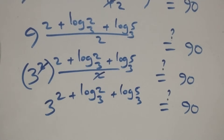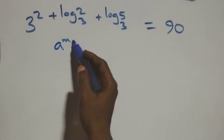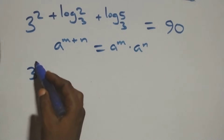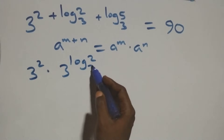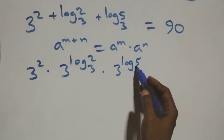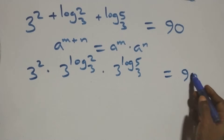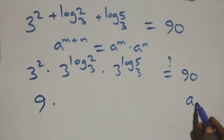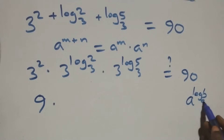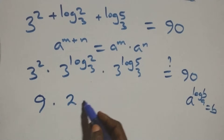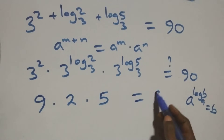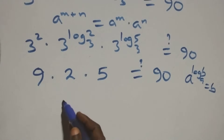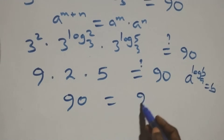Then also here, 9 can be expressed as 3 squared, so the power multiplies and we have 3 squared raised to power (2 plus log 2 base 3 plus log 5 base 3) all over 2, equals 90. Applying the law of indices, when we have a raised to power n plus n, this is the same as a raised to power n times a raised to power n. So we get 3 squared times 3 raised to power log 2 base 3 times 3 raised to power log 5 base 3, equals 90. Three squared is 9, and from the identity a raised to power log b base a equals b, we get 9 times 2 times 5, and 2 times 5 is 10, and 10 times 9 equals 90.